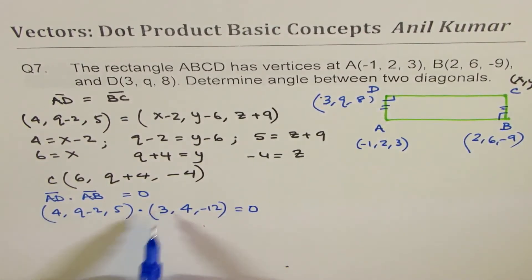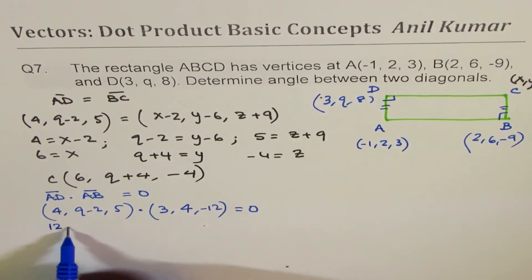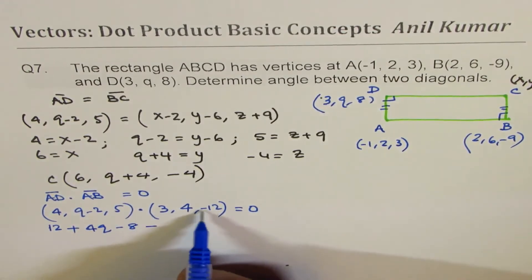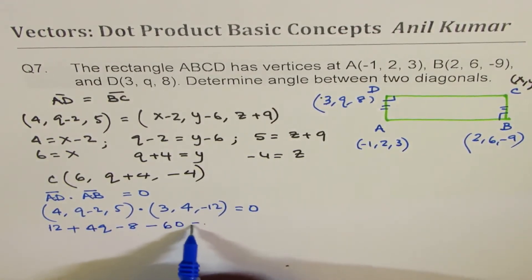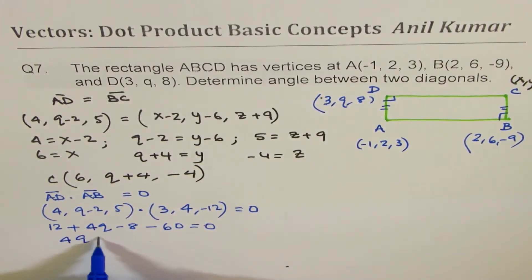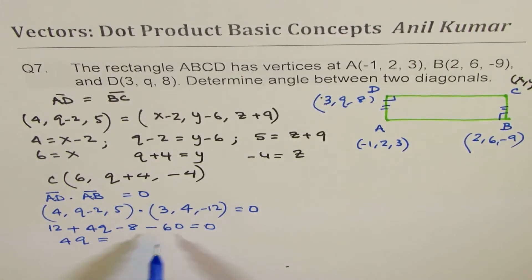So let's multiply. 4×3 = 12, plus 4Q, minus 8, minus 12×5 = 60, equals 0. So we can calculate Q now.